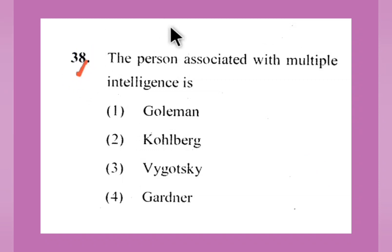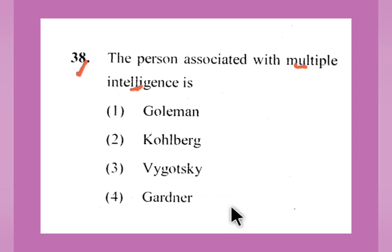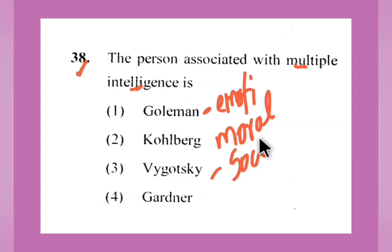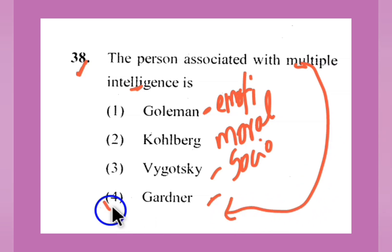Question number 38: The person associated with multiple intelligences — Goldman, Kolberg, Vygotsky, or Gardner? Goldman focused on emotional intelligence theory. Kolberg said about moral development. Vygotsky proposed the socio-cultural theory. Gardner proposed the multiple intelligence theory. Option number 4, Gardner, is the right answer. We must make a list of all these psychologists and their theories — it will be useful for your exams.